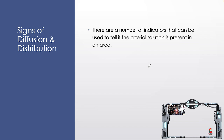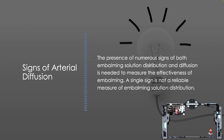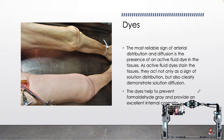There are a number of indicators used to tell if arterial solution is present in an area. The signs of arterial distribution include: dye evident in the tissues, distention of the superficial blood vessels, blood drainage, and clearing of intravascular blood discolorations. The presence of numerous signs of both embalming solution distribution and diffusion is needed to measure effectiveness. A single sign is not a reliable measure. The most reliable sign of arterial distribution and diffusion is the presence of an active fluid dye in the tissues — dye is great for distribution, but for diffusion you need a little bit something extra.